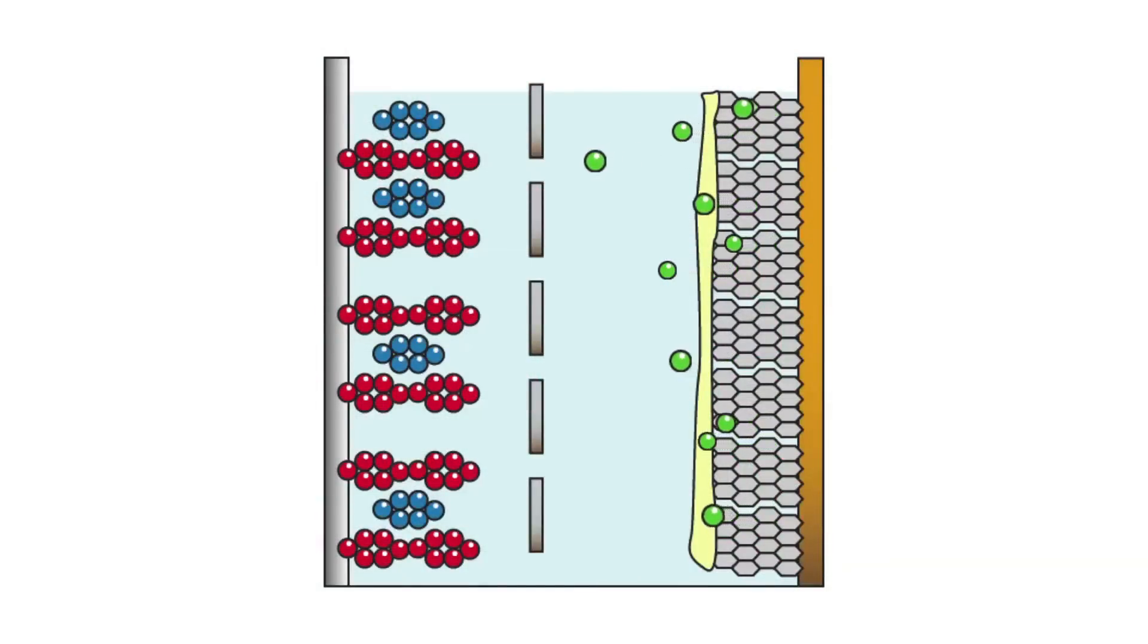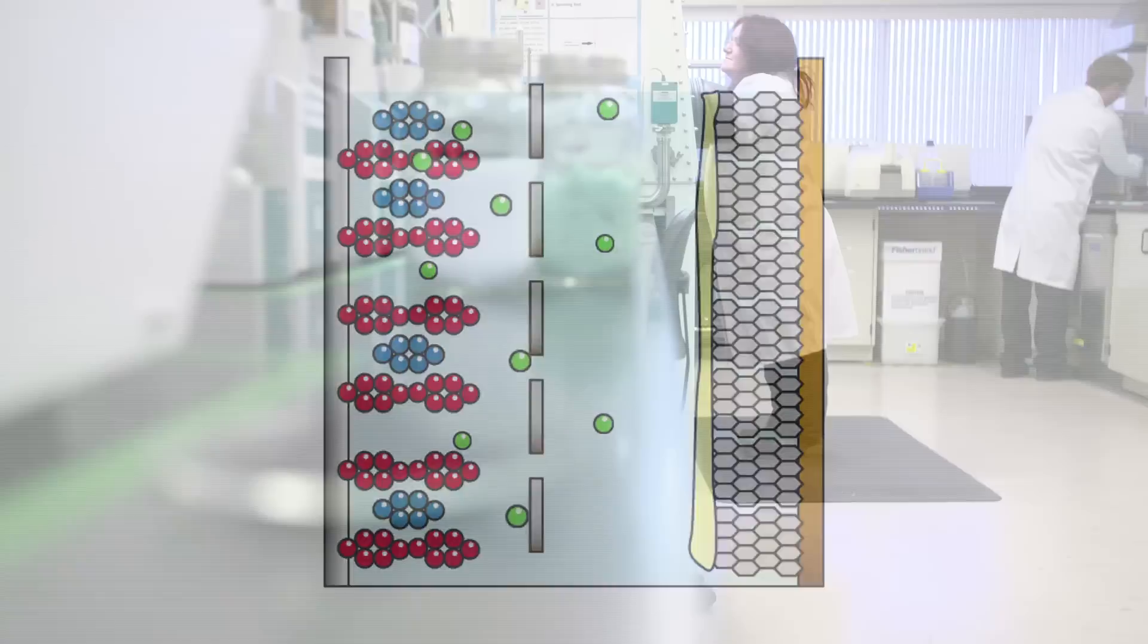Lithium ions from the anode material shown on the right move across to the cathode on the left. At the same time, a flow of electrons are generated, which is the power required for the vehicle.